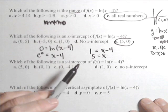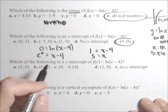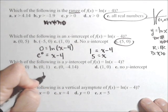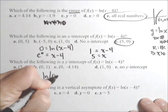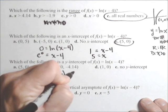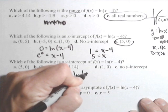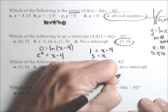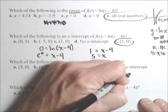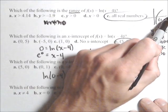The y-intercept of ln of x minus 4, that's the output when the input is 0. So, if we do that, ln of 0 minus 4 equals ln of negative 4, which is undefined.